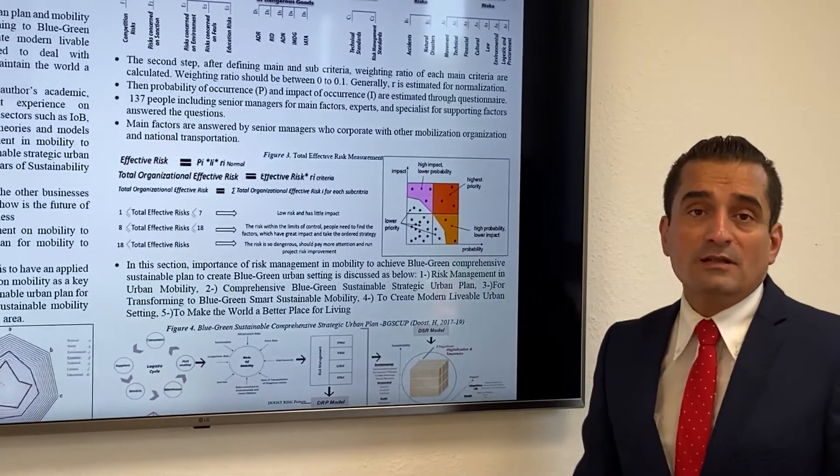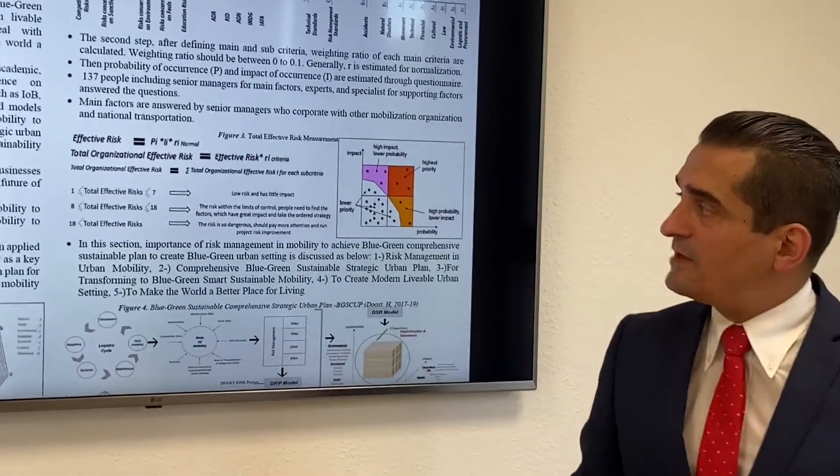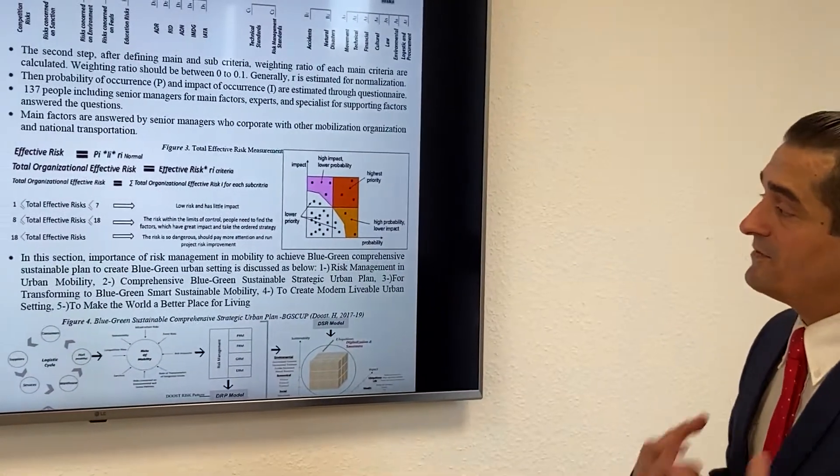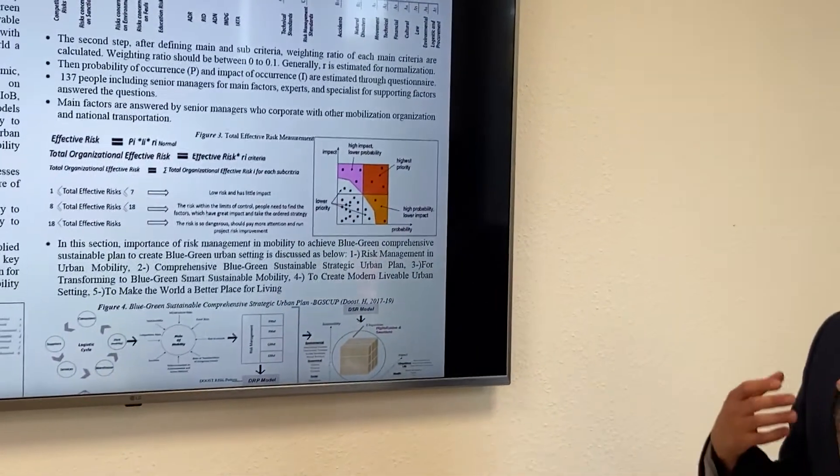If the total risk is between 1 to 7, risk is low. If it is between 8 to 18, risk is medium. If it is more than 18, risk is high and we need to be careful.